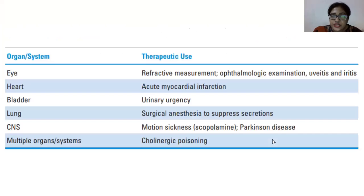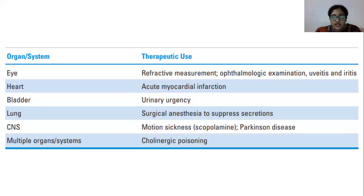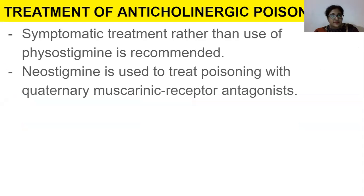In summary, anti-muscarinic drugs are used for: ophthalmology — refractive measurement, fundoscopic examination, uveitis, and iritis; heart — acute myocardial infarction; bladder — urinary urgency; lungs — surgical anesthesia to suppress secretions, and asthma/COPD via inhalation; CNS — motion sickness with scopolamine and Parkinson's disease; and cholinergic poisoning.